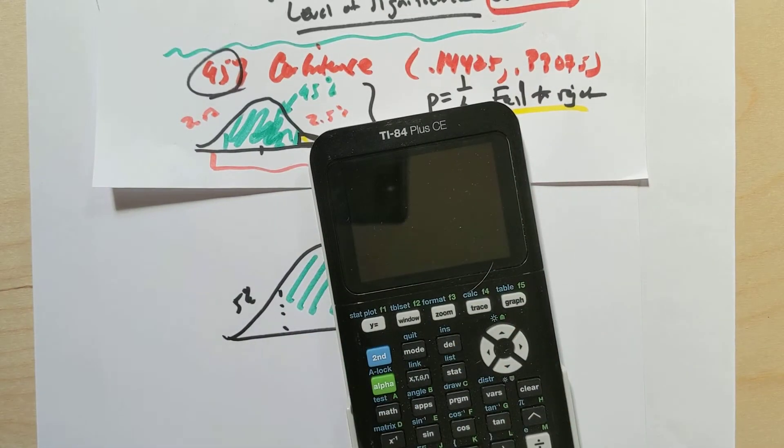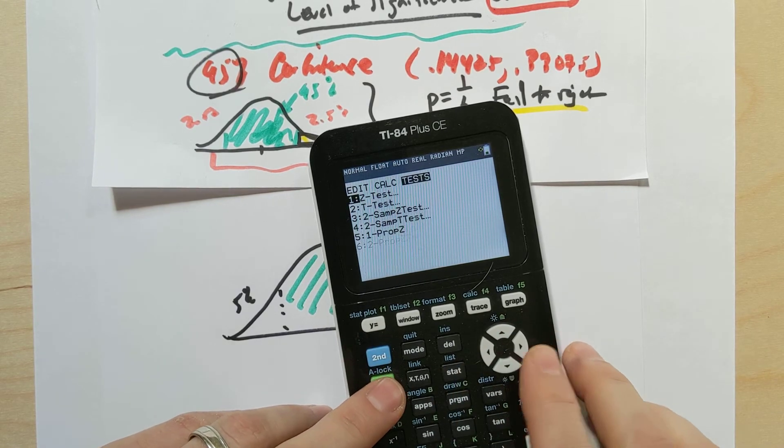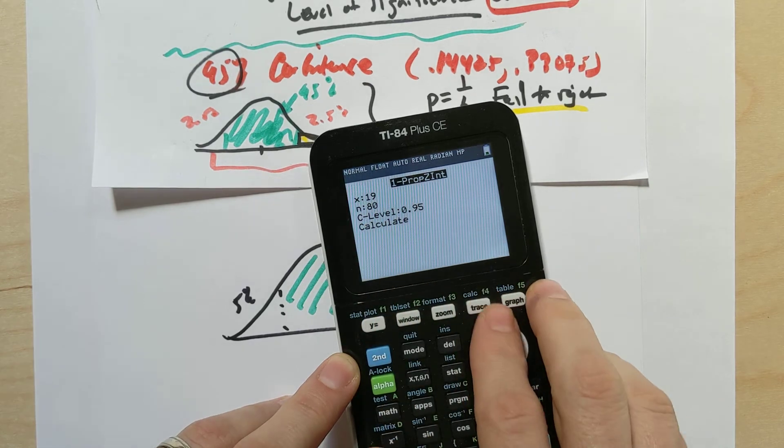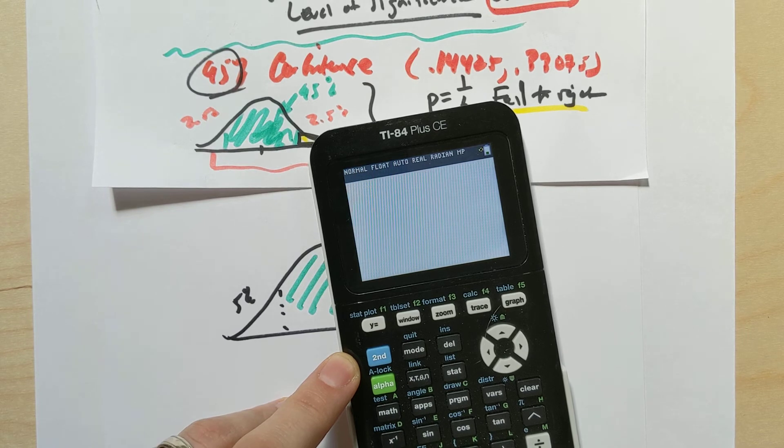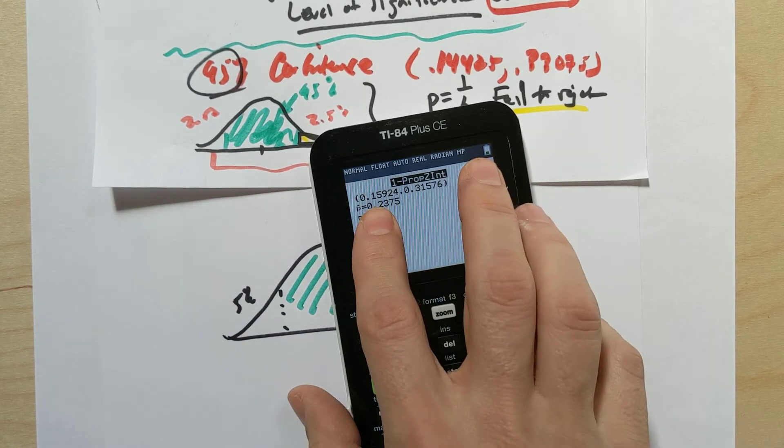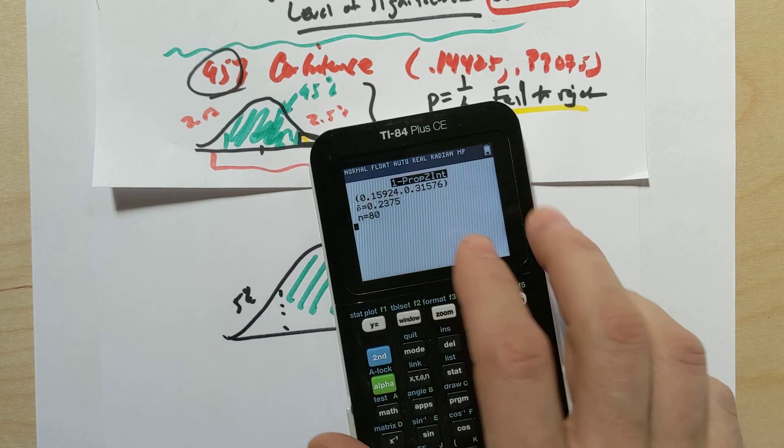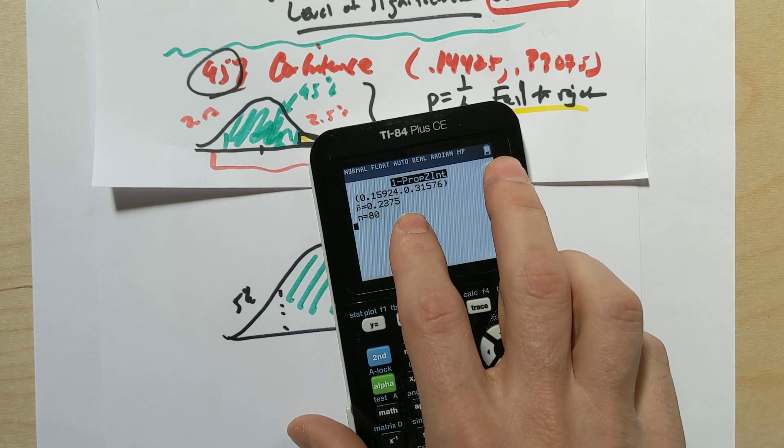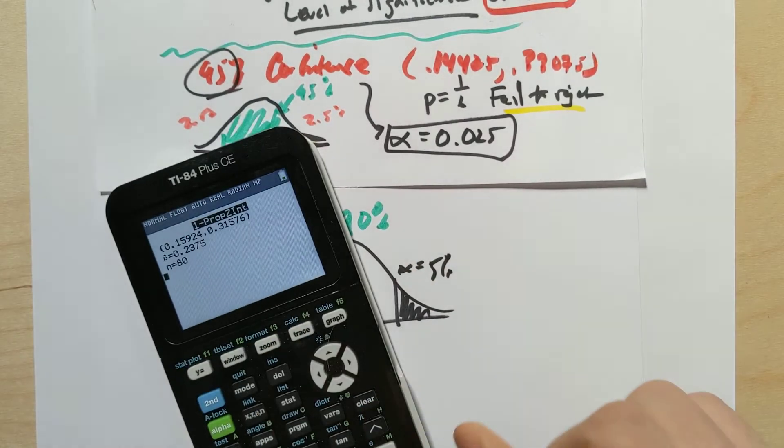Let's put it to the test. Let's take out our calculator. We're going to do the one prop zint again. I'll go to test, alpha A. I'll do 19 successes in 80 trials, but I'll change my level of confidence to 0.90. I'll calculate and shazam. What do we see here? We see 0.159 and 0.31576. Is P in this situation? Wait a second. It's in there, isn't it? Ooh, did I just lie to you about everything?